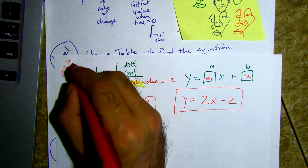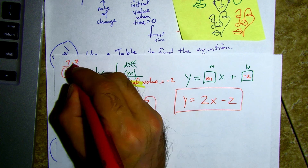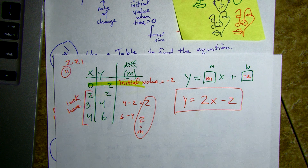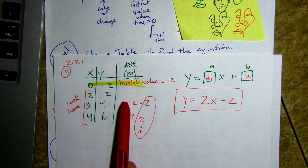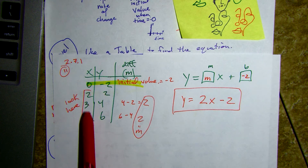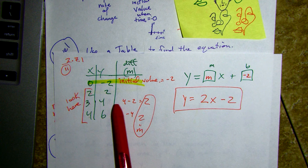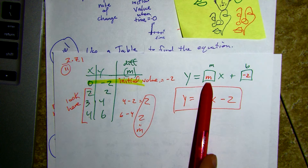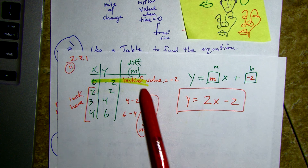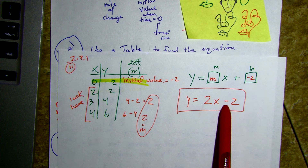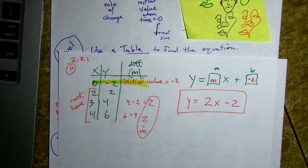What we did here was we looked to see what the difference was between sequential values, and from that we knew the slope was two. Then I looked to see what the initial value was when x is zero — we have negative two, that's our b value, so I put it in the b value position.